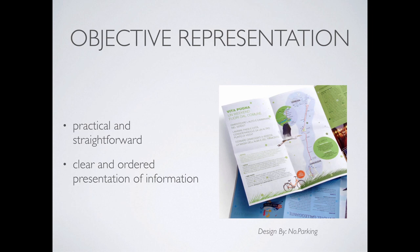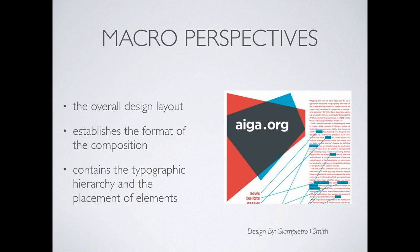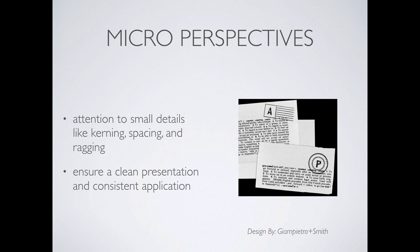Objective representation is the practical, straightforward way of ordering text — a clear, ordered presentation of information with a clear hierarchy. Subjective is the more interpretive way, focused on how letters work together to create an overall composition. Macro perspectives consider the overall design: how does type fit in, what's the format, the typographic hierarchy — headlines look like this, bodies like this, quotes like this. Micro perspectives are the small details like kerning, spacing, ragging, and tracking, ensuring clean and consistent presentation of your fonts.